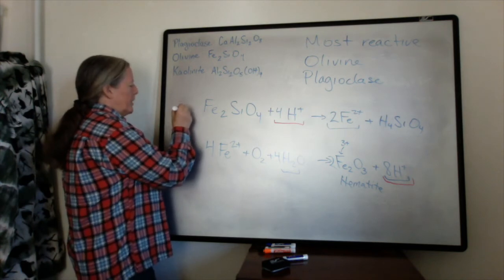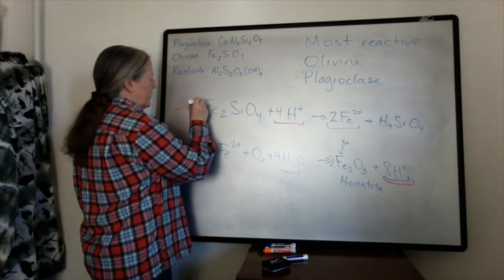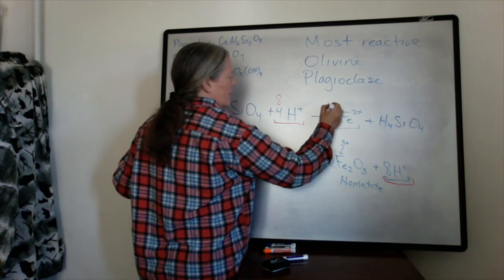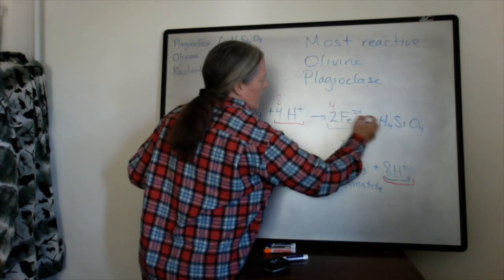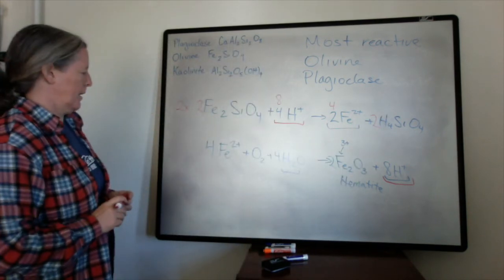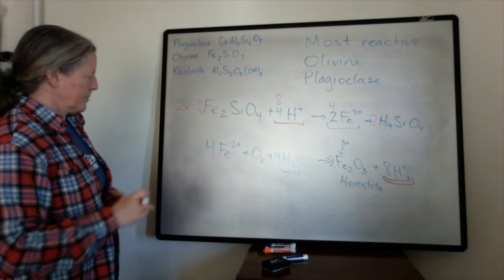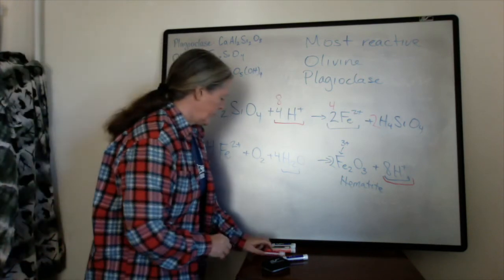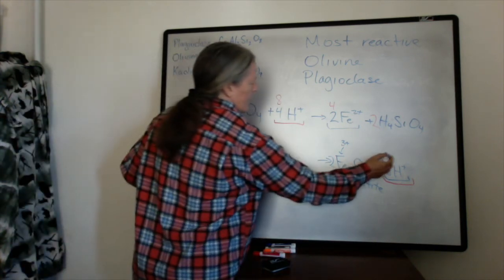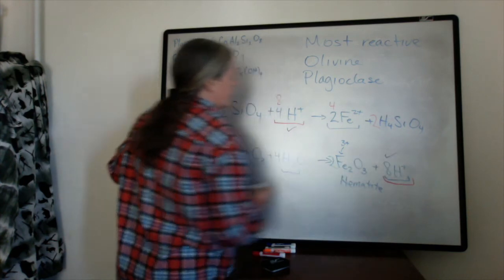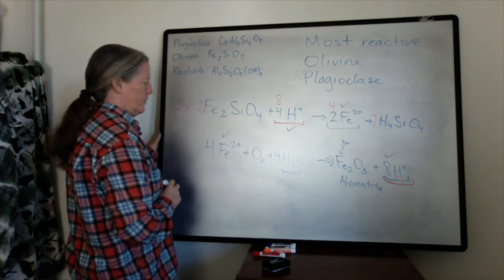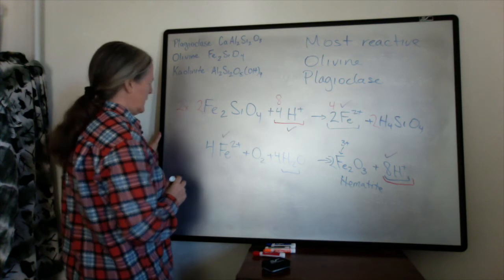So I'm going to multiply this equation times two. So I have two olivines, eight protons, four irons, and two hydrated silica. When I add these two equations together, we basically now have eight protons and eight protons, so we can get rid of those two. We have four irons and four irons, so we can get rid of those two. And everything else stays the same.